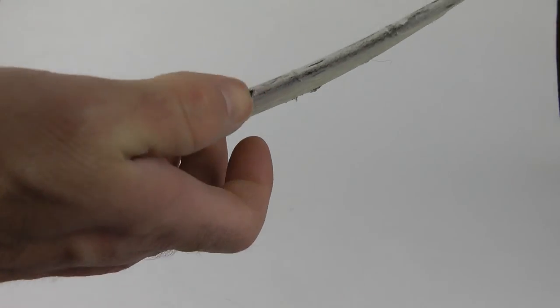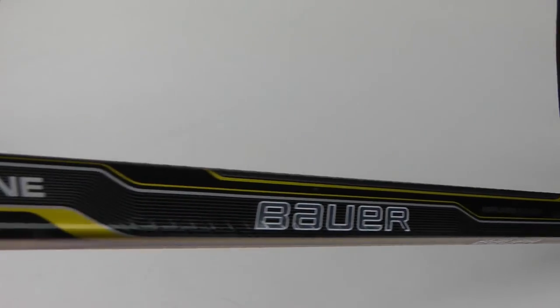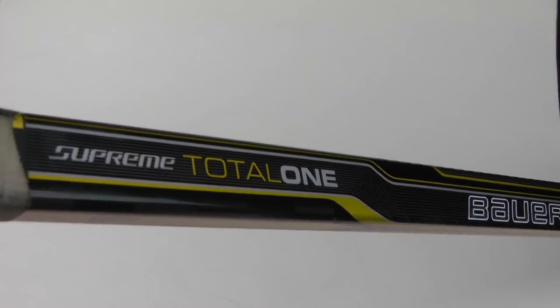You want to keep these sticks, especially if it's one that you like. This is my Tays P14 curve Bauer Total One. So it's an older stick, but works really well for me. I really like it. Supreme Total One.